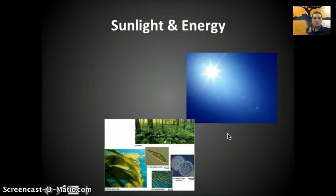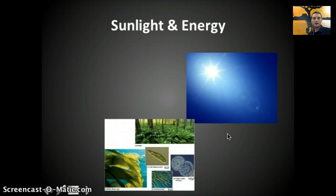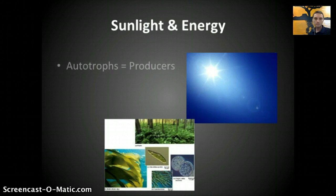Producers use the sugars they make through photosynthesis to make ATP through respiration, and that's what consumers do as well. We acquire energy not by making it ourselves, but by getting it from somewhere else. We then use that ATP energy made by aerobic respiration to do different tasks and allow our cells to function. ATP is needed for activities like making DNA and RNA, for proteins to function, and for pumping molecules across membranes — ATP is what drives the workforce in cells.